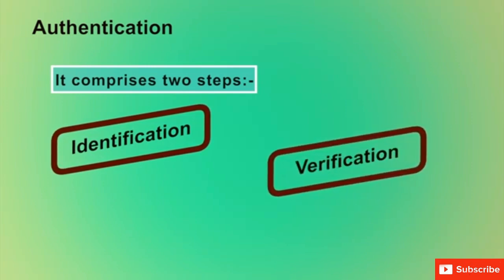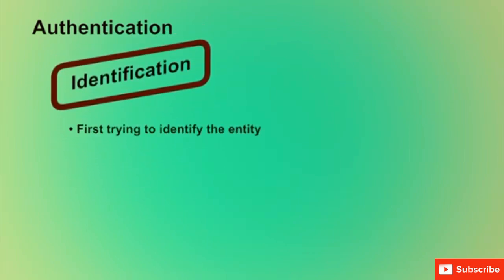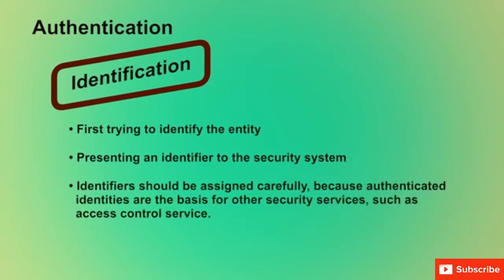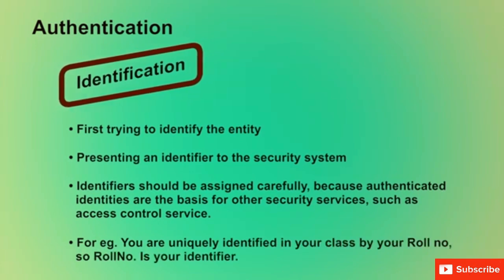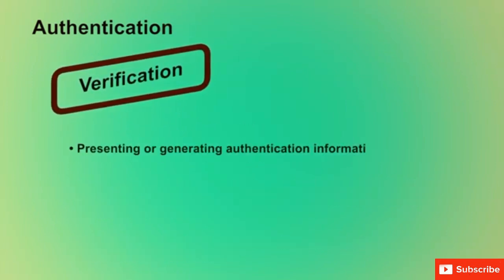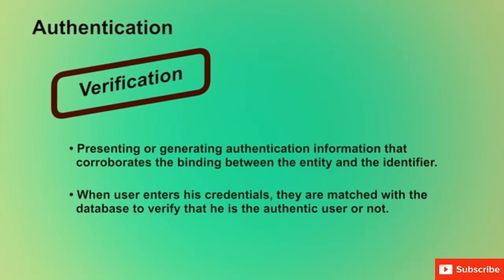In the identification step, we try to identify the entity by presenting an identifier to the security system. An identifier should be assigned carefully because authenticated identities are the basis for other security services such as access control. For example, you are uniquely identified in your class by your roll number. In the verification step, the user presents authentication information that corroborates the binding between the entity and the identifier. The user's credentials are matched with the database to verify whether he is the authentic user.